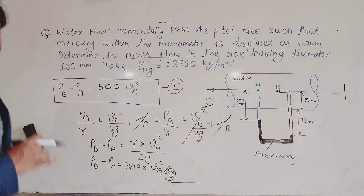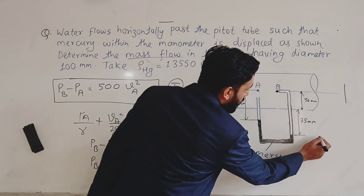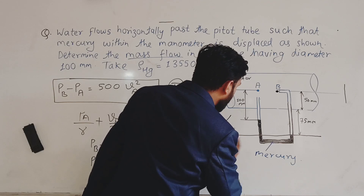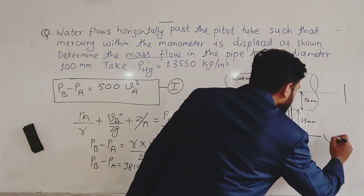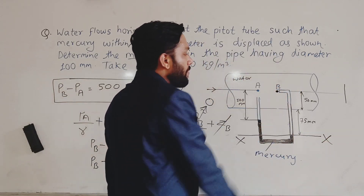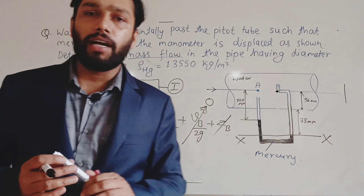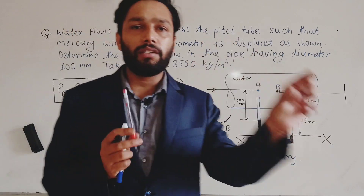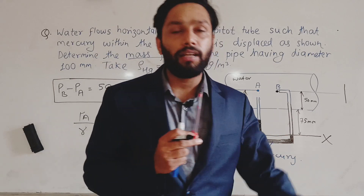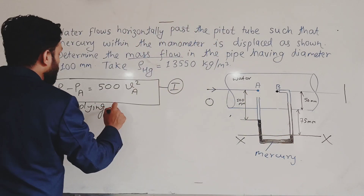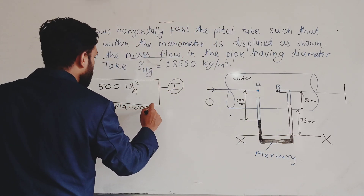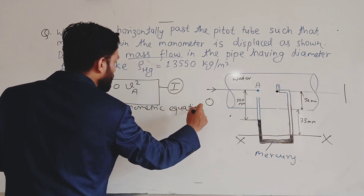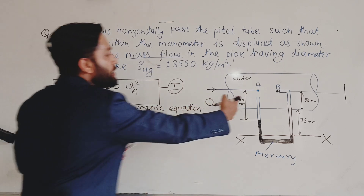Now I apply the manometric equation. The differential level of mercury in the manometer is termed x-x, which is the datum for the manometric equation. These U-tube manometers are used to determine the pressure difference between points, so let us apply the manometric equation between A and B.